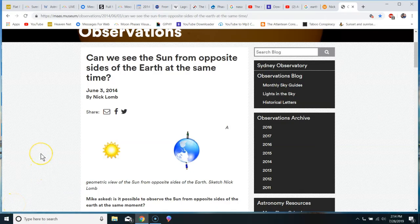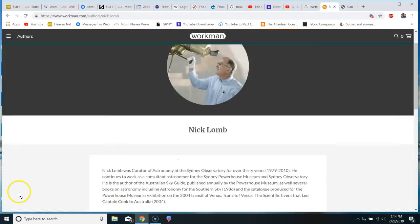Well, fortunately, a different Mike asked that question back in 2014. Is it possible to observe the sun from opposite sides of the Earth at the same moment? And the question was answered by a fellow named Nick Loam. Before we see the answer, let's see who Nick Loam is. Nick Loam was curator of astronomy at the Sydney Observatory for over 30 years. He continues to work as a consultant astronomer and he authors the Australian Sky Guide, which is published annually. He's also written several books on astronomy. So, suffice it to say that Nick Loam knows a little bit about the heliocentric model. So, let's see how he answered Mike's question.